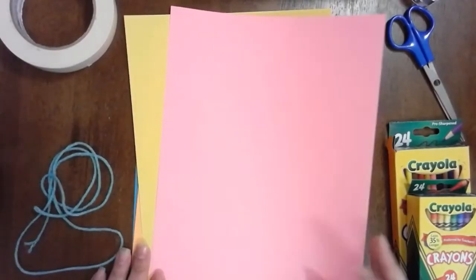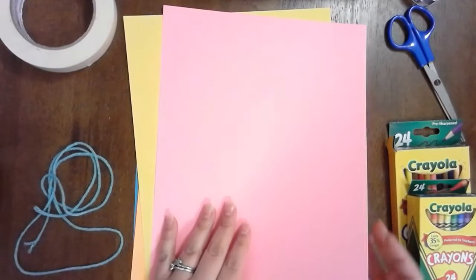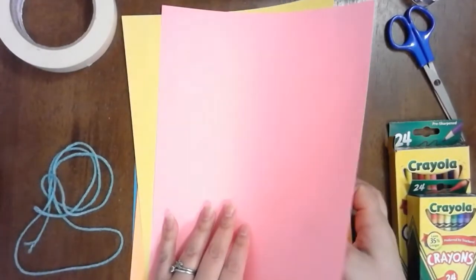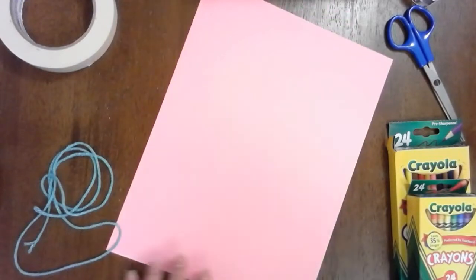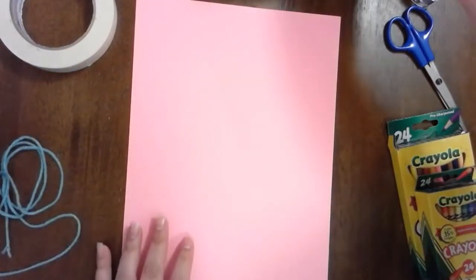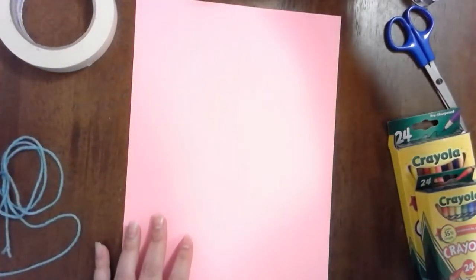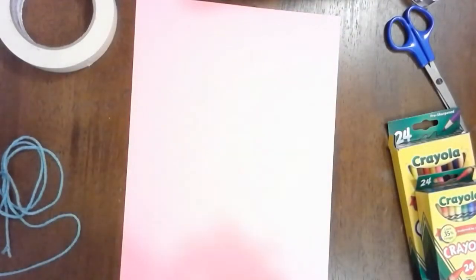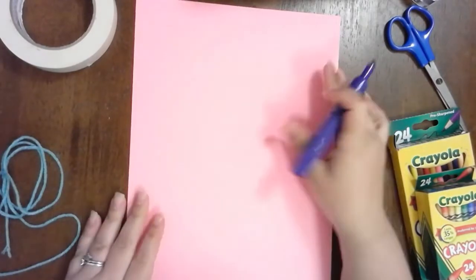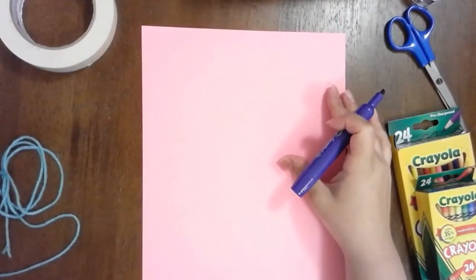For this project, you're going to need some paper, some yarn or some string. You're also going to need some scissors, some glue, and if you don't have glue, you can use tape. You're also going to use either markers, colored pencils, crayons, paint, whatever you guys have.